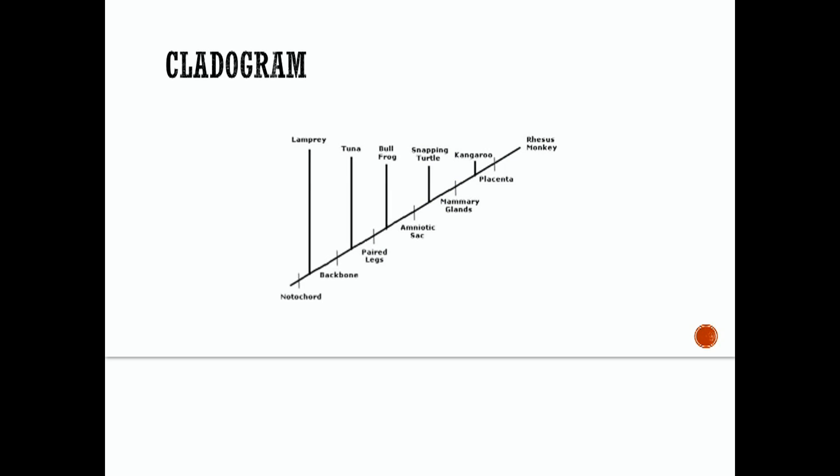A cladogram is a diagram that shows the phylogeny or genetic heritage of a species. Like this one pictured, it identifies a derived characteristic, the characteristics that first appeared at a certain point in history. So the organisms following the trait in the diagram are also assumed to have that trait. For example, let's look at this diagram here. The trait of a backbone emerged before the appearance of the tuna fish. So the tuna fish and all of these following organisms in this diagram will also have a backbone. If we go up here to amniotic sac, amniotic sac appeared before the snapping turtle. So the snapping turtle and all of these should have an amniotic sac as well.